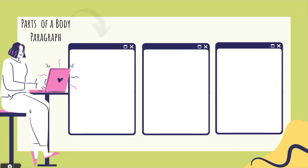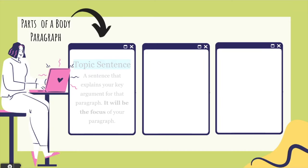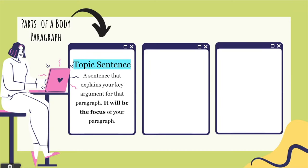So here are the parts of a body paragraph. Part one, we start with the topic sentence. That's a sentence that explains your key argument for that paragraph. It's not your thesis statement, it's just a sentence that explains one key argument, and that will be the focus of your paragraph.